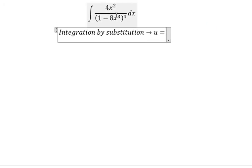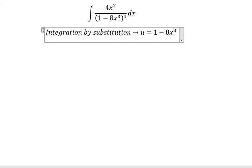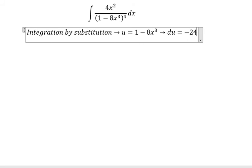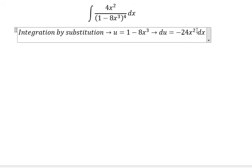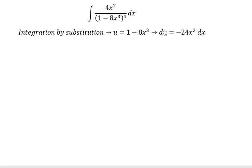We set u equal to 1 - 8x³. Then du equals -24x² dx. So we divide both sides by -6.